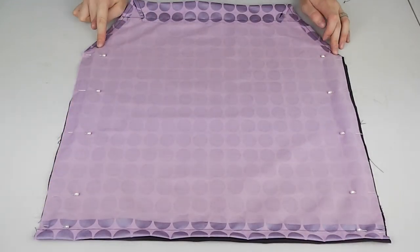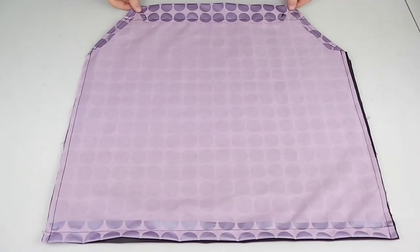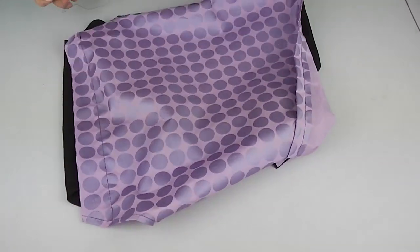Sew along both side seams and turn right side out. At this point you may need to iron or press the dress again.